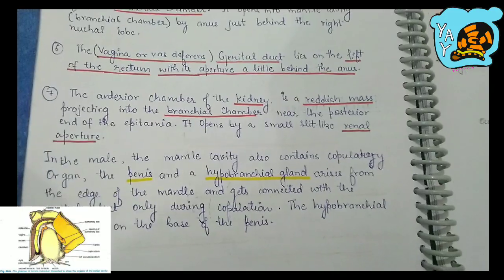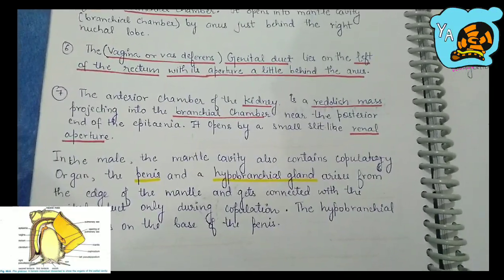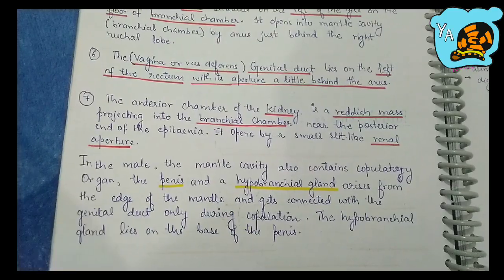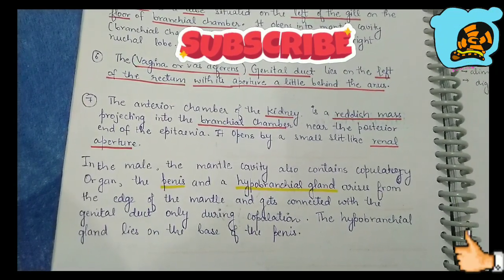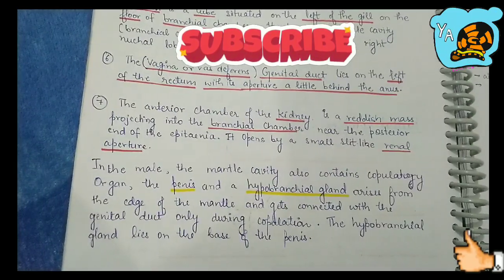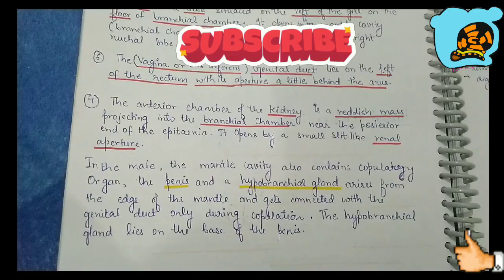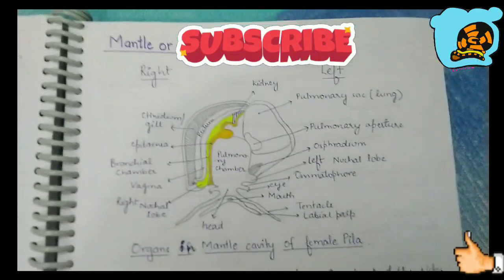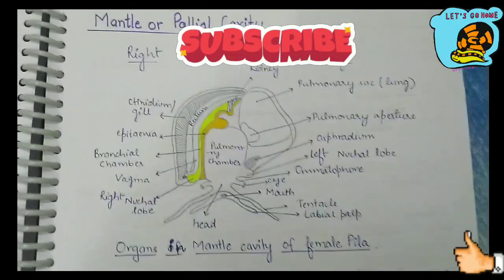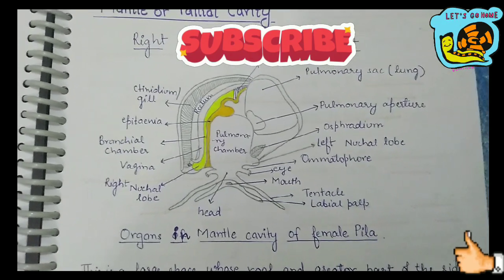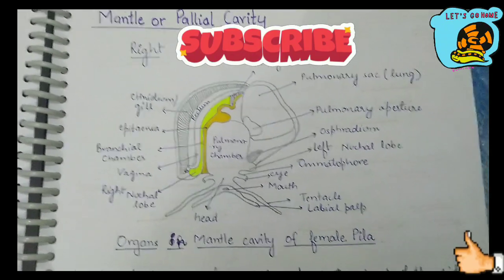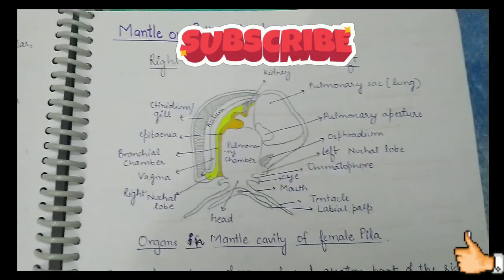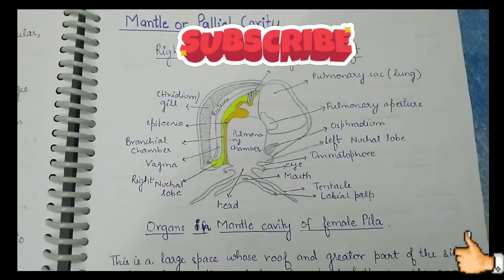The hypobranchial glands lie on the base of the penis of the male Pila. So this is about the mantle cavity of the Pila, in which we have studied the various organs present. This diagram is very important to understand the mantle or paleal cavity and the positions and formation of the organs. I hope you liked this video — please don't forget to subscribe, like, share, and comment. Thank you.